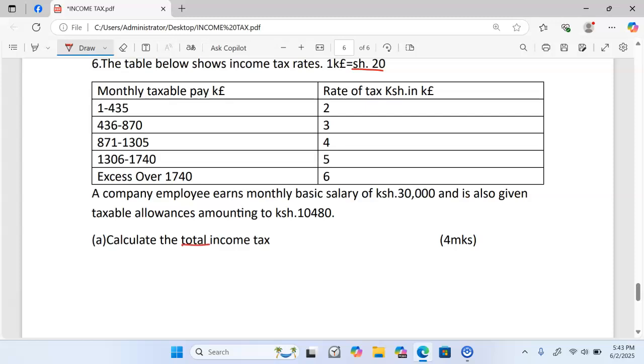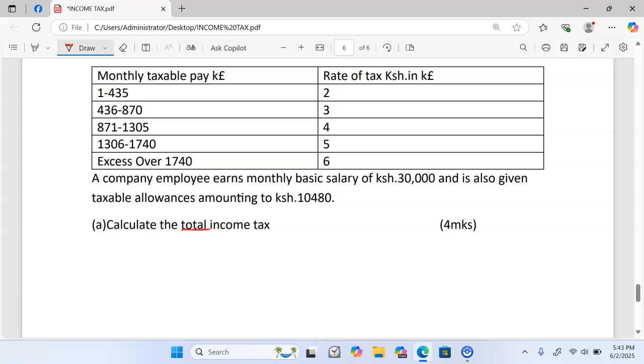Part A: calculate total tax or simply gross tax. Total tax is tax calculatable from the table. The first thing we do is to start by calculating the taxable income. Taxable income is given by the basic salary, we add all the taxable allowances, we minus nominal rent. Nominal rent is for the people who are housed by the employer for which they pay a nominal rent. In this case we are given a basic salary of $30,000, we add total allowances of $10,480 and that gives us an amount equivalent to $40,480 per month.